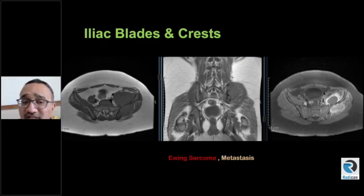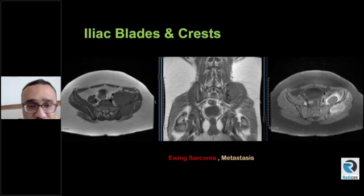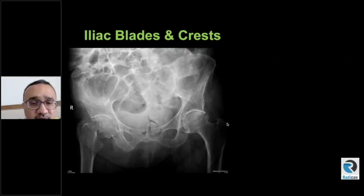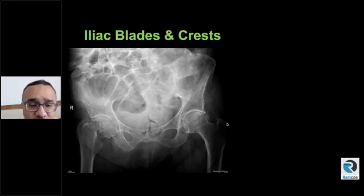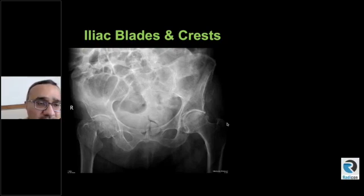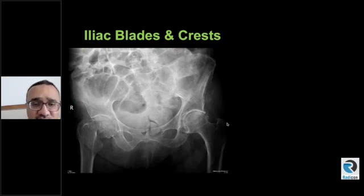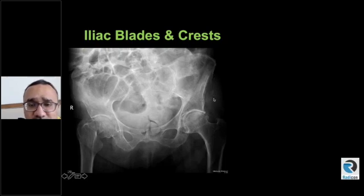Think about sarcoma if it's a heterogeneous aggressive-looking lesion, or consider metastasis. Another patient — an elderly patient — had a fall, and you can see there is an intracapsular fracture of the right femoral neck. But keep looking: bowel gas is obscuring the right iliac blade, but suddenly your eye catches a lytic extensile surface lesion arising from the left iliac crest.